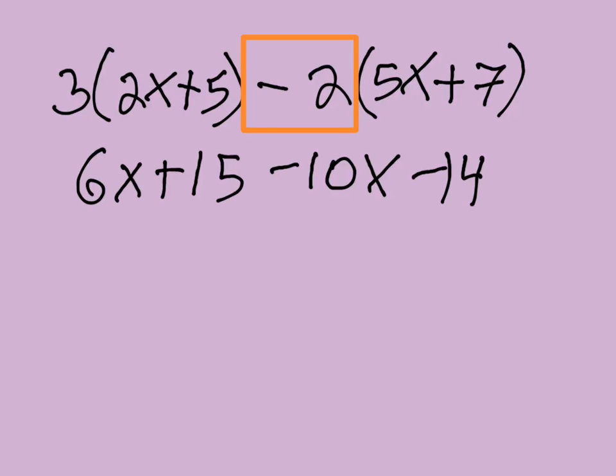So we have 6x plus 15 minus 10x minus 14 because we have negative 2 times 5x and negative 2 times 7. And now we just combine the rest of those.